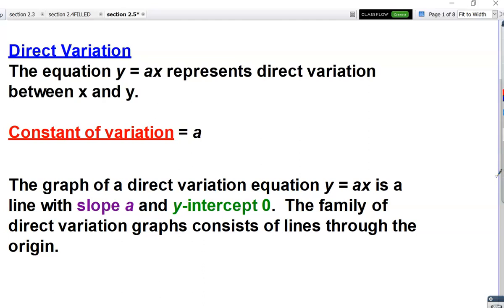So again, we represent direct variation with y equals ax. A is called the constant of variation. And when you look at a graph of a direct variation equation, the slope is a, and then the y-intercept is zero. All direct variation equations will pass through the origin, and they are linear equations.